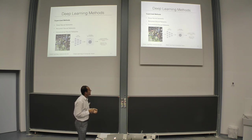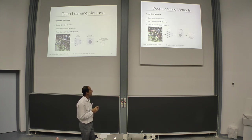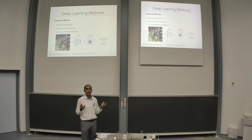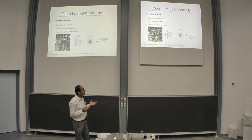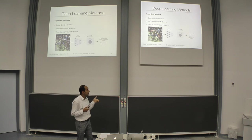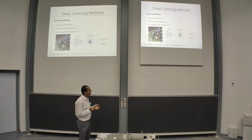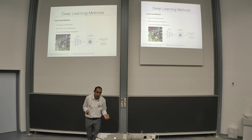This is an example from Google showing where deep learning research is going. You have an input image and you want to find a caption for it. First you extract features with a deep convolutional neural network, then you feed these features into a recurrent neural network, and you end up with a caption — for example, 'a group of people shopping at an outdoor market.'